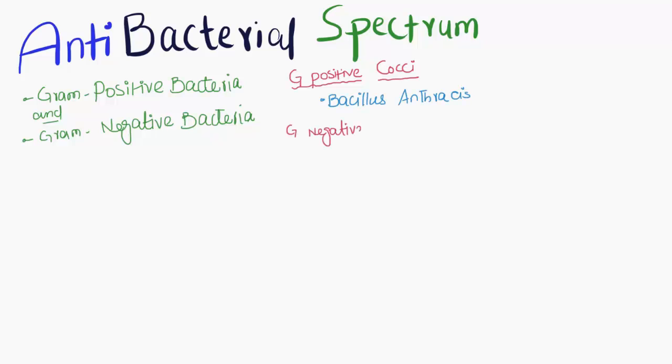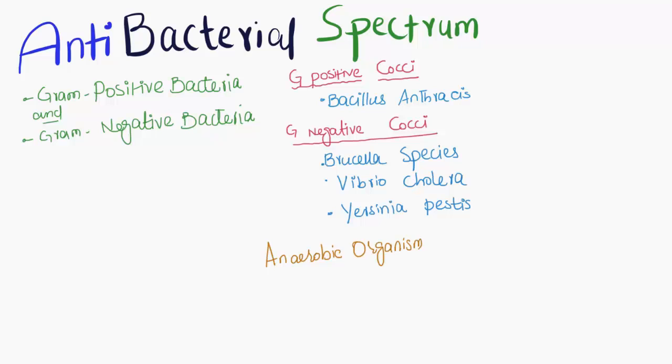Gram-negative cocci include Brucella species, Vibrio cholerae, and Yersinia pestis. Anaerobic organisms include Clostridium tetani and Clostridium perfringens.